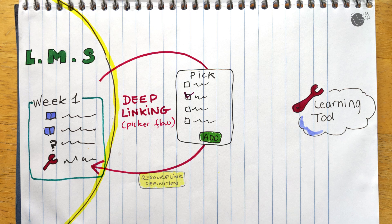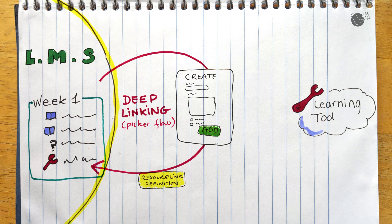It allows you to launch from the LMS to the tool to pick or create some content and return it back to the LMS where the link is going to be inserted. That link will contain the information about where to launch the tool. So next time when the student or instructor clicks on that link, then it will launch the minigame or the simulation or the chapter it was picked during the deep linking flow.